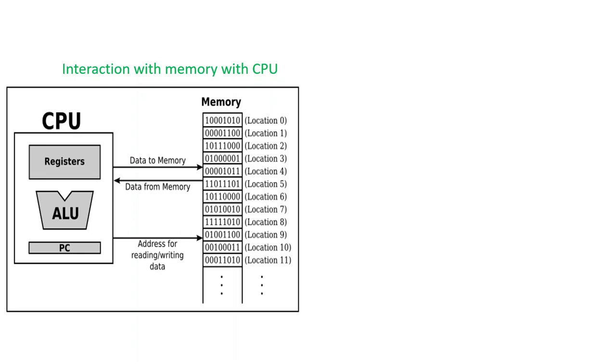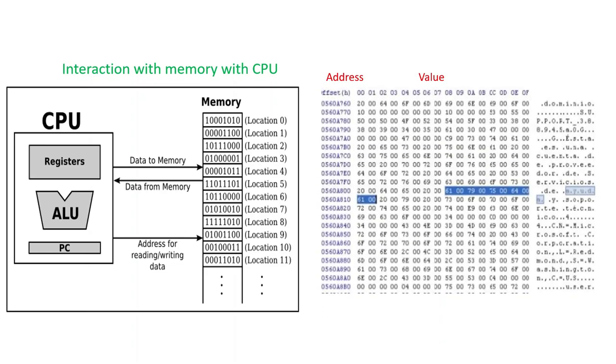Every location is represented with an eight-digit hexadecimal number for 32-bit operating systems, and every location consists of a value.